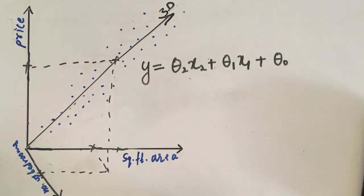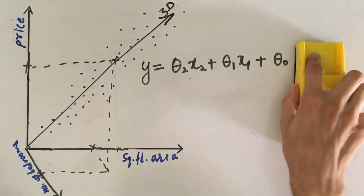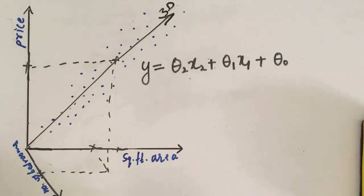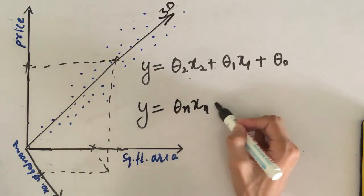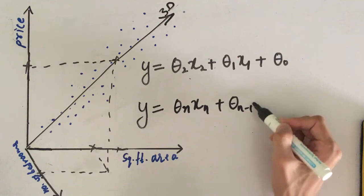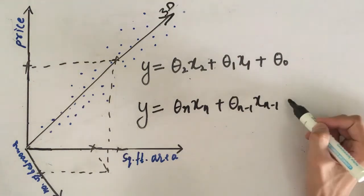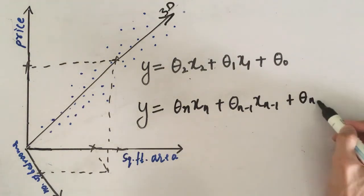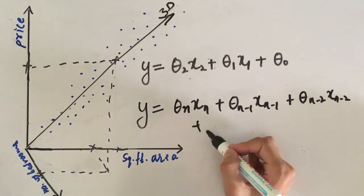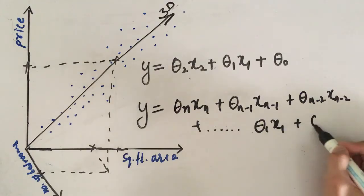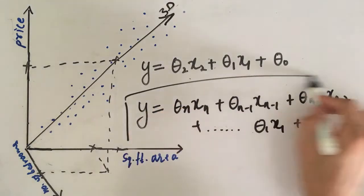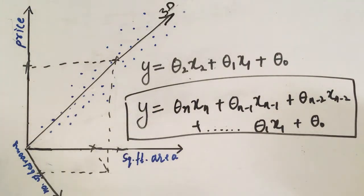Now we have done it for two variables. What about multiple variables? For multiple variables the line will be y equals theta n x n plus theta n minus 1 x n minus 1 plus theta n minus 2 x n minus 2 plus dot dot dot theta 1 x 1 plus theta 0. For n features the equation of the line will be represented by this.